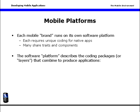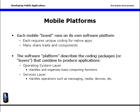So what happens at each layer? Well, the operating system layer handles and organizes basic computing functions, just like it does on your desktop computer. The services layer handles operations such as messaging, media, devices, and so forth. Each platform has its own number, type, and combination of services, so you'll want to be aware of your own platform's services layer.